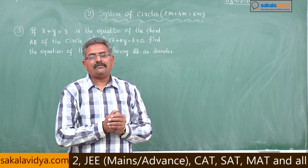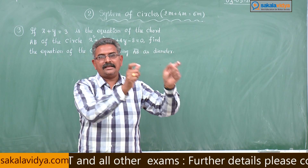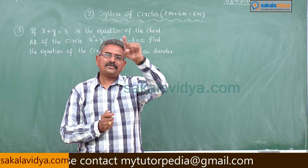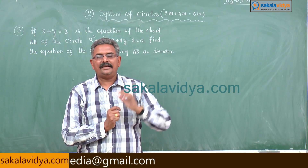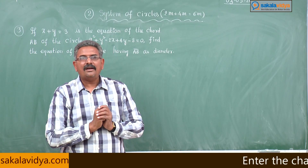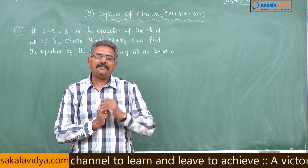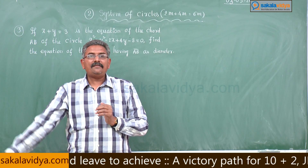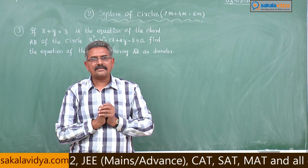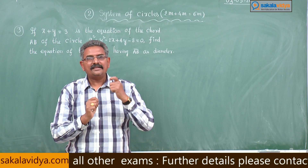This is a very important problem. What is given here? The equation of the circle and the equation of the chord of that circle are given. We are asked to find the equation of the circle passing through the points of intersection of the chord and circle, having the chord as the diameter. Let S equals 0 be the circle and L equals 0 be the equation of its chord. Then any equation of the circle passing through the points of intersection of S equals 0 and L equals 0 can be taken as S plus lambda L equals 0, where lambda is a parameter — that is the required circle.